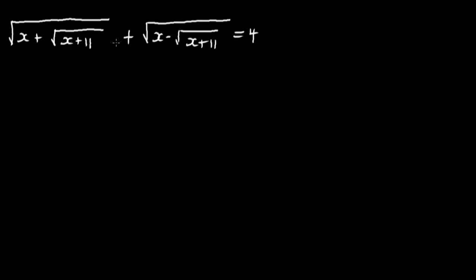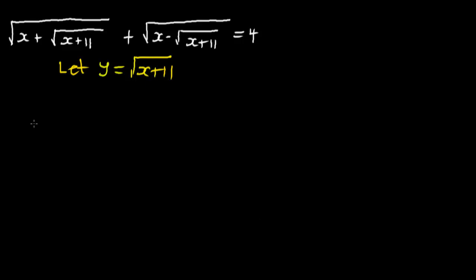Looking at the equation carefully, we can see that we have a common term. We are going to let the common term be a variable — we are going to let Y be equal to the common term, which is the square root of X plus 11.